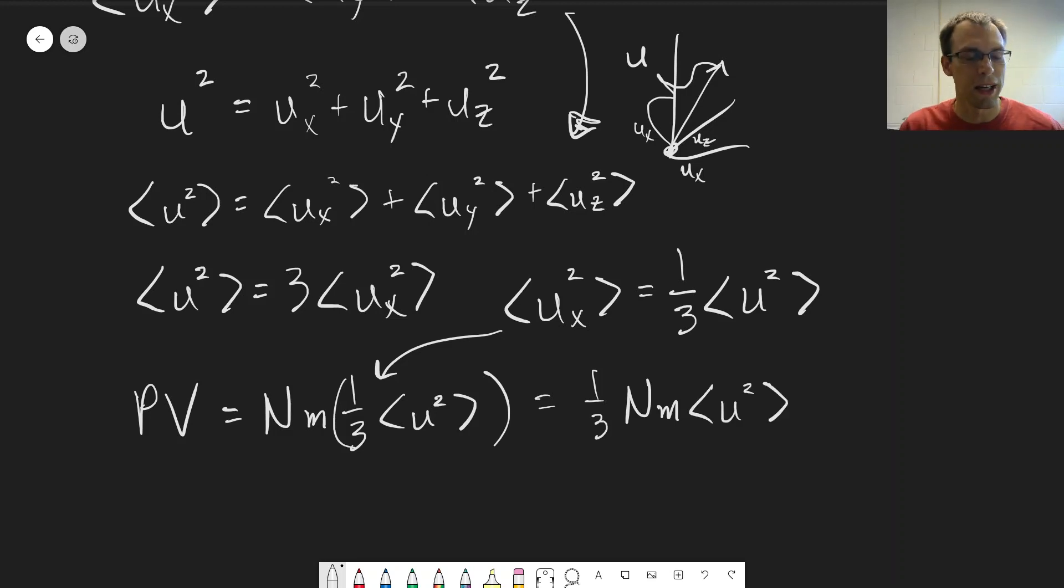So now we have something that's related to the speed. Now, it's not looking at a particular component, but we're relating it to the speed of the particle. So we have the average of the square of the speed.